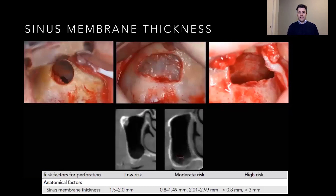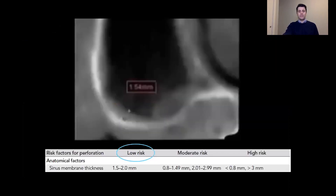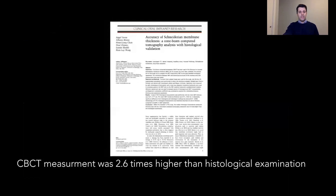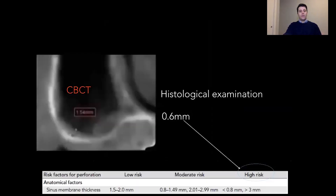On our scan, we are able to study the thickness of our membrane, and not all membranes have the same thickness. A previous study showed that a very thin or very thick membrane has a higher chance of risk. For example, measuring 1.5 millimeters on the scan puts us in a low-risk category. However, an interesting study shows that on CBCT, we tend to estimate 2.6 times higher than a histological examination. So a membrane appearing 1.5 millimeters will actually be around 0.6 millimeters, placing us in a high-risk category for perforation.